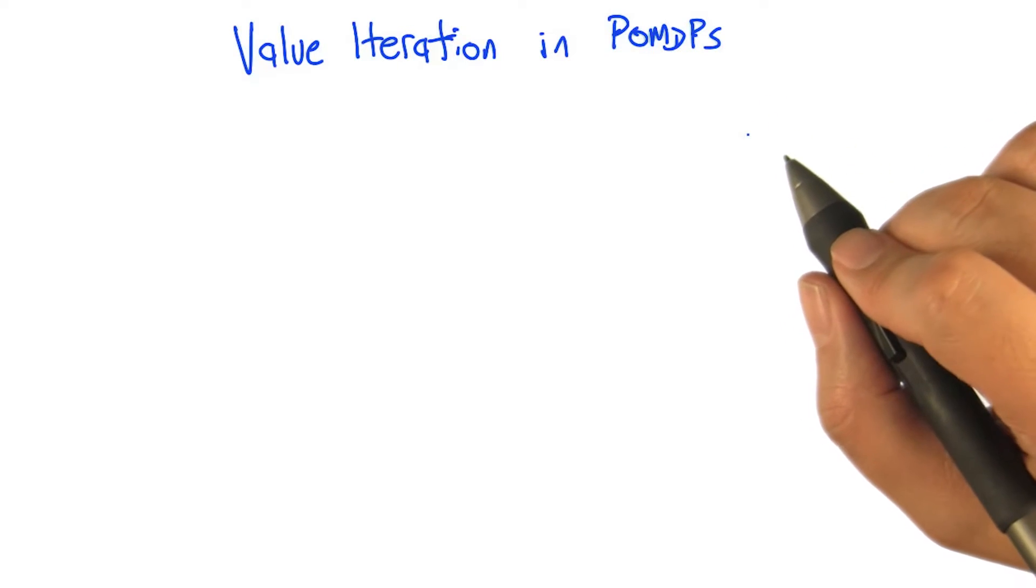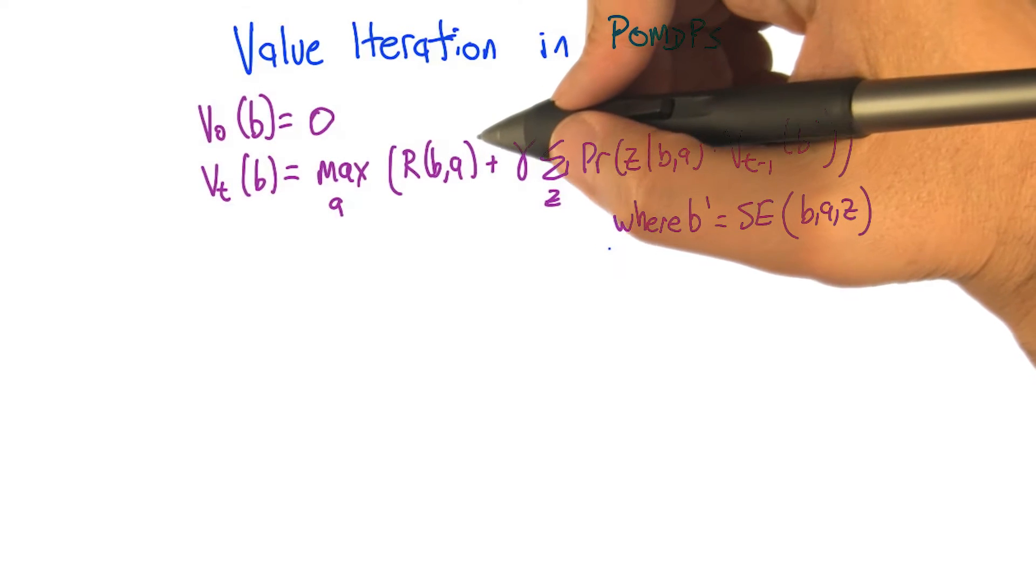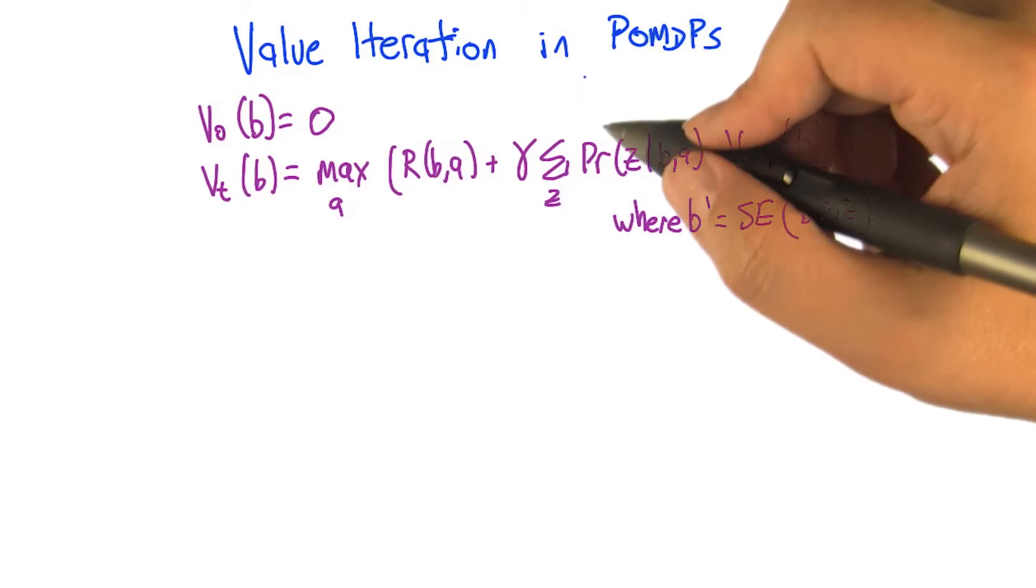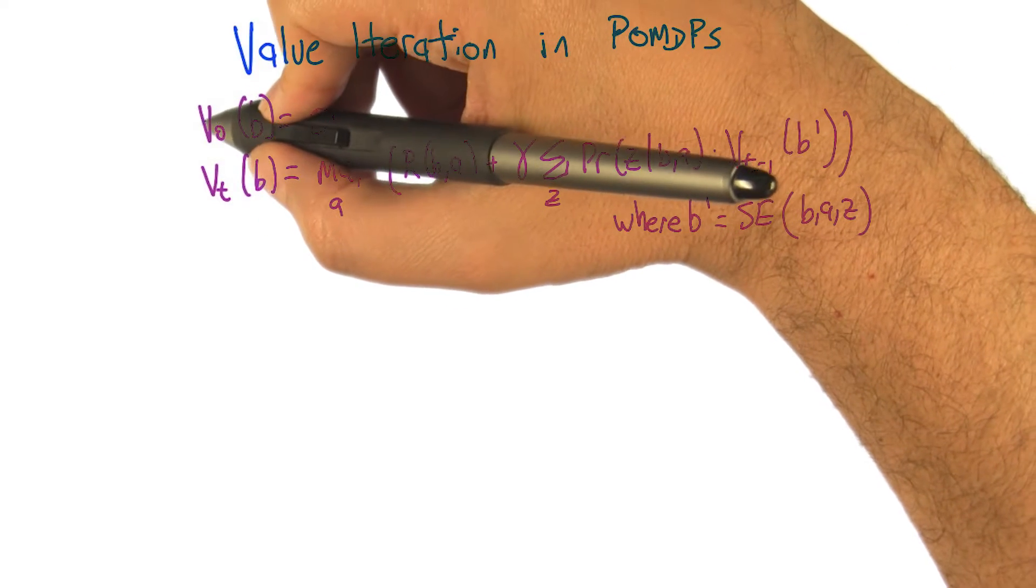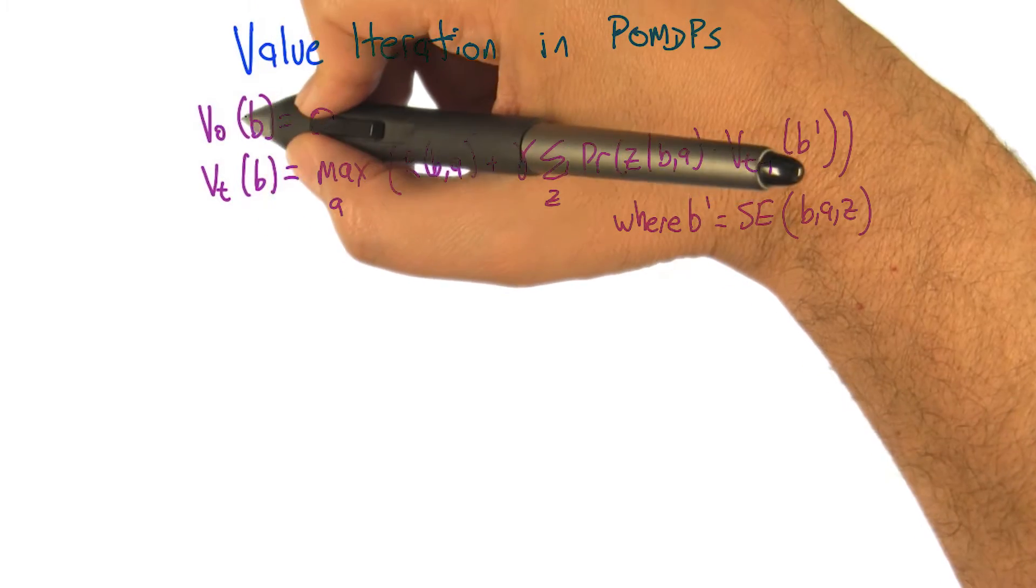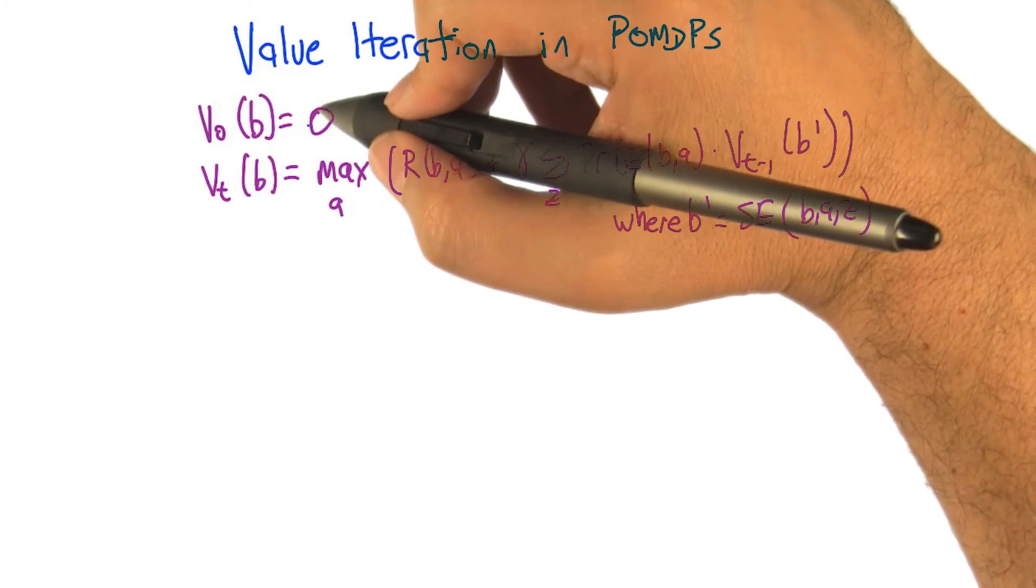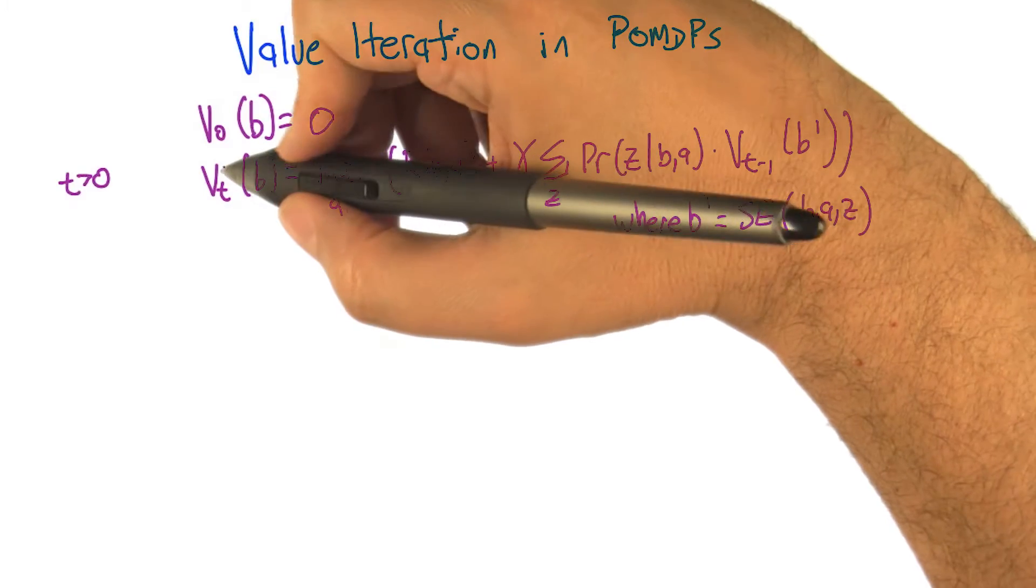So at first it's going to be math, and then it's going to be an algorithm. Here's value iteration written out, and it's in POMDPs but doesn't really matter yet. We're going to define the value function at step zero to be, as a function of the belief, just zero everywhere. Then we'll say for t greater than zero,